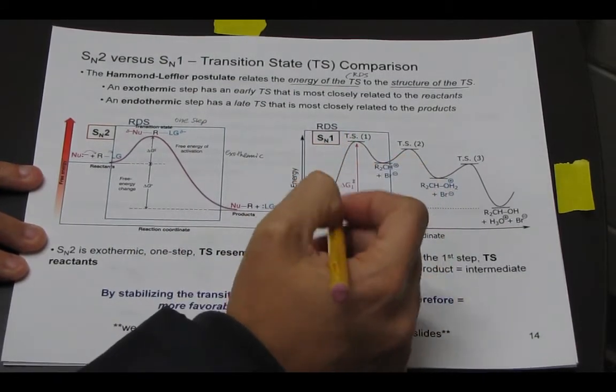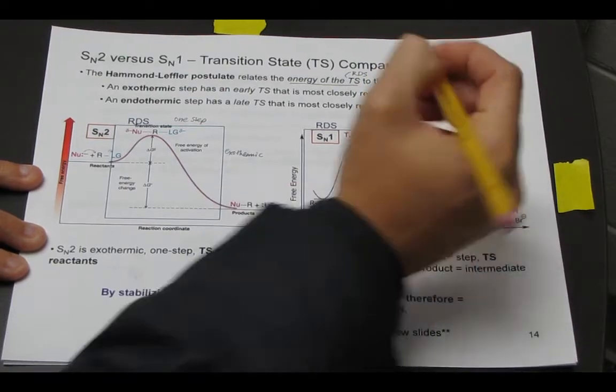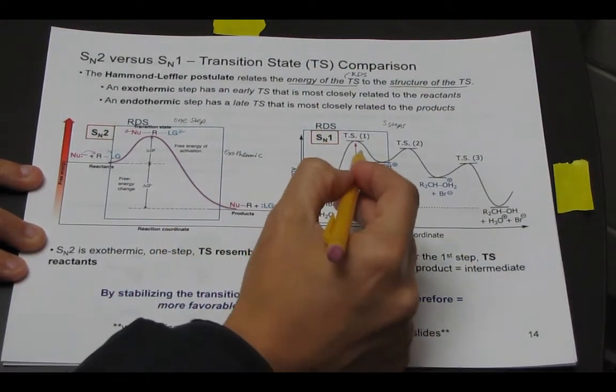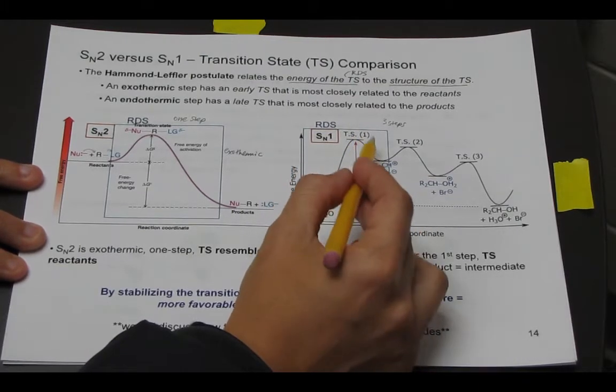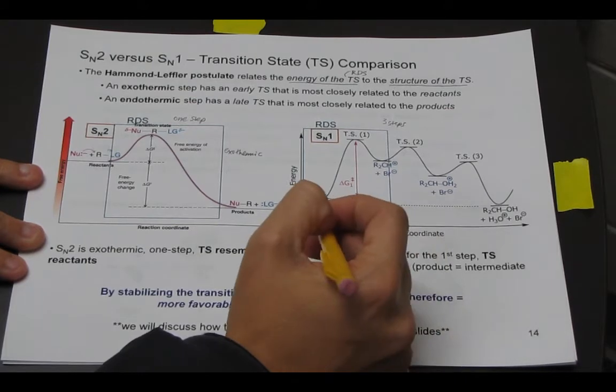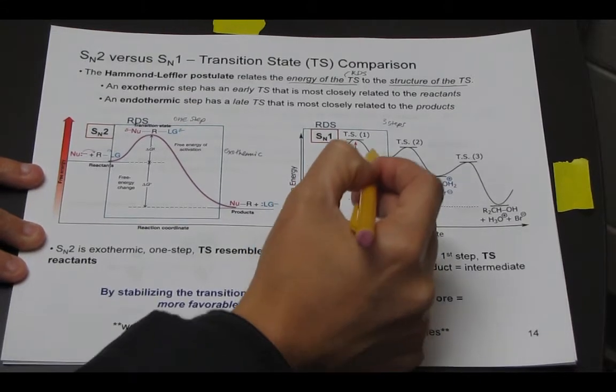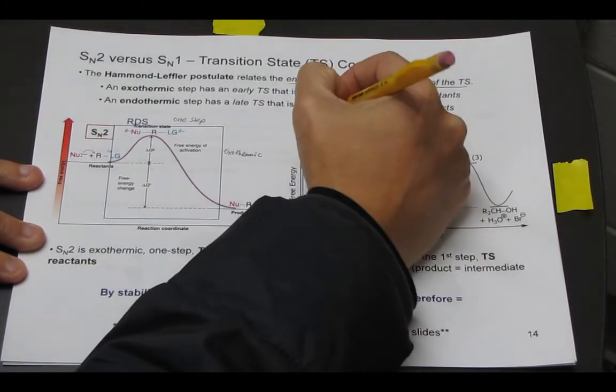And then if we look at the SN1 reaction, an SN1 reaction occurred over three steps, but the first step had the highest energy barrier. So the first step is the rate-determining step. And if we just focus on the first step, we start here, and we go to here. And so that's uphill, and so that's endothermic.